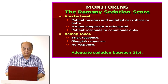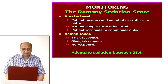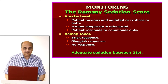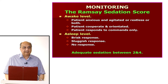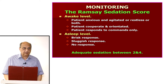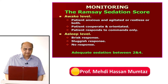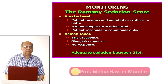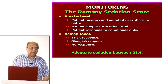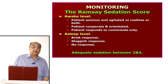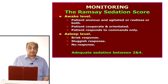Level two is the patient is cooperative and oriented. Level three is the patient responds to commands only, otherwise goes to sleep. Level four is the patient is sleeping but has a brisk response to painful stimuli. Level five is a sluggish response. Level six is when the patient is asleep and does not respond to any stimuli, regardless of what is applied.